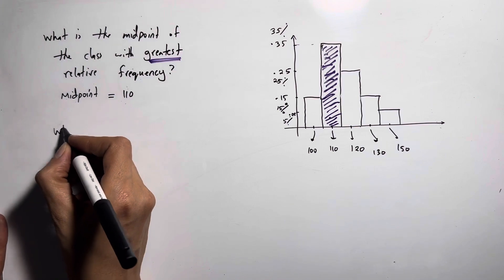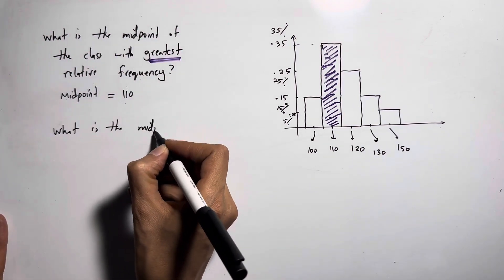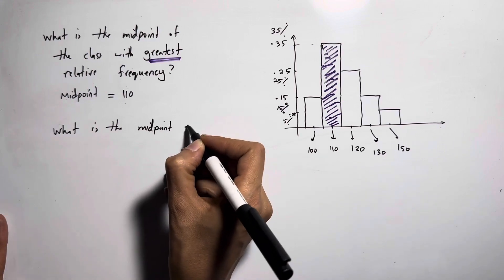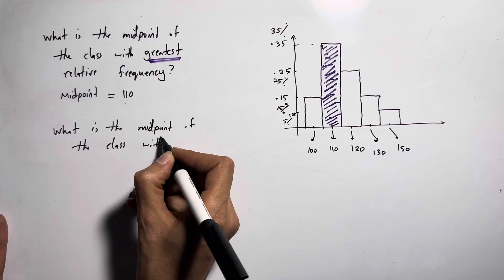Now what if the question says what is the midpoint of the class with least relative frequency?